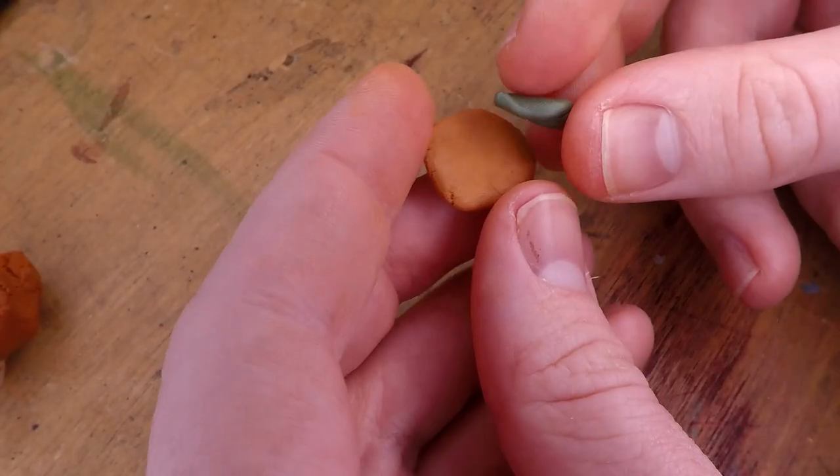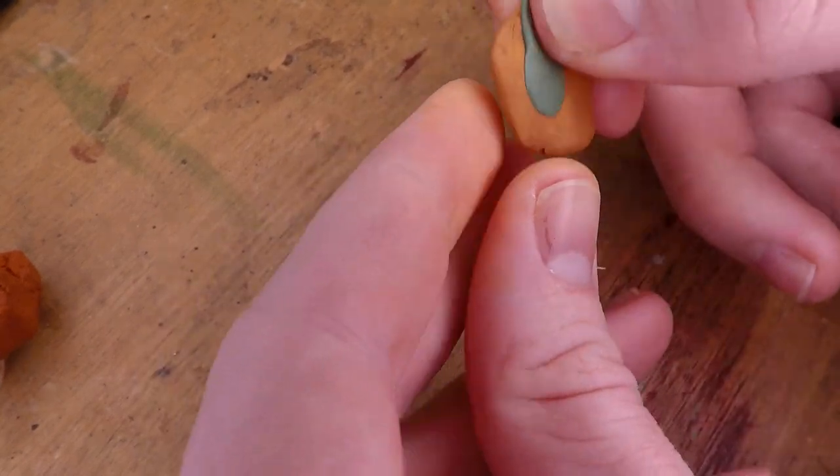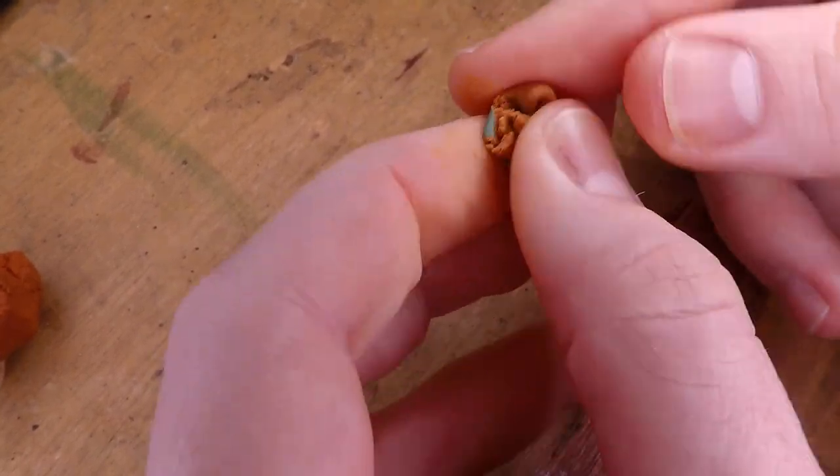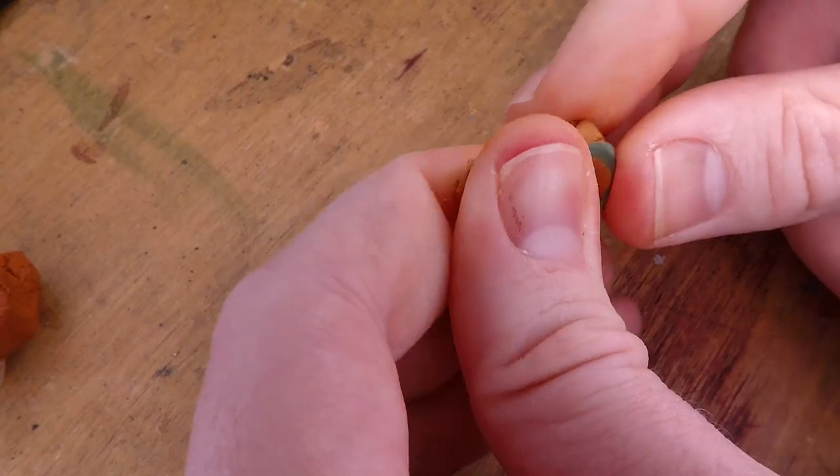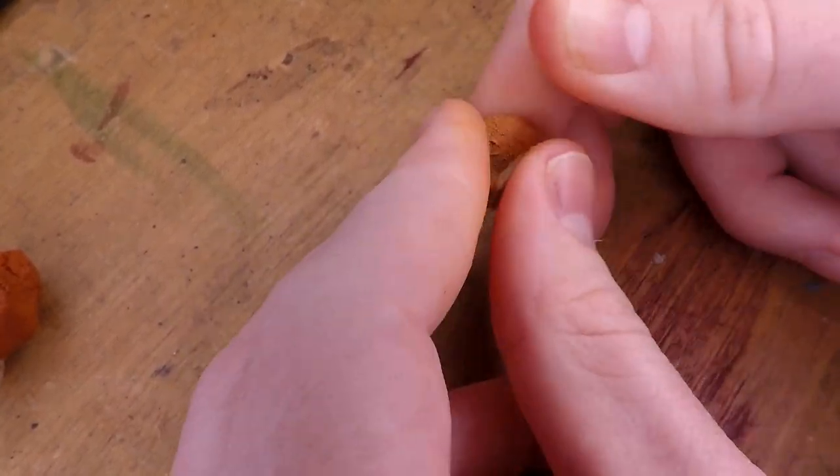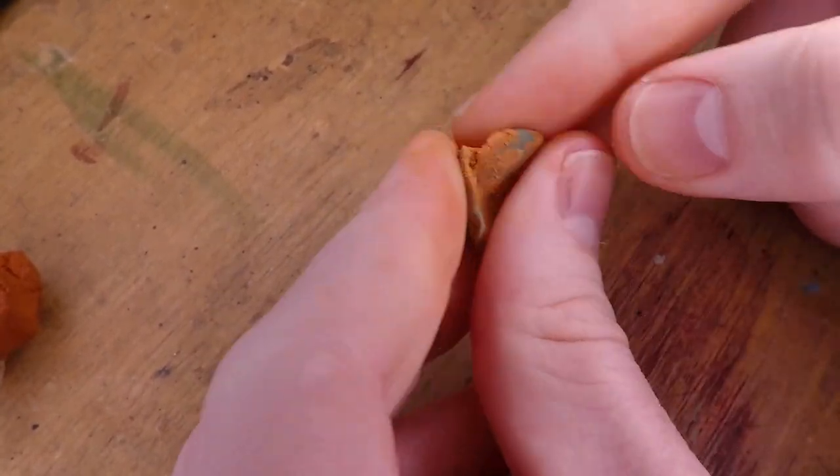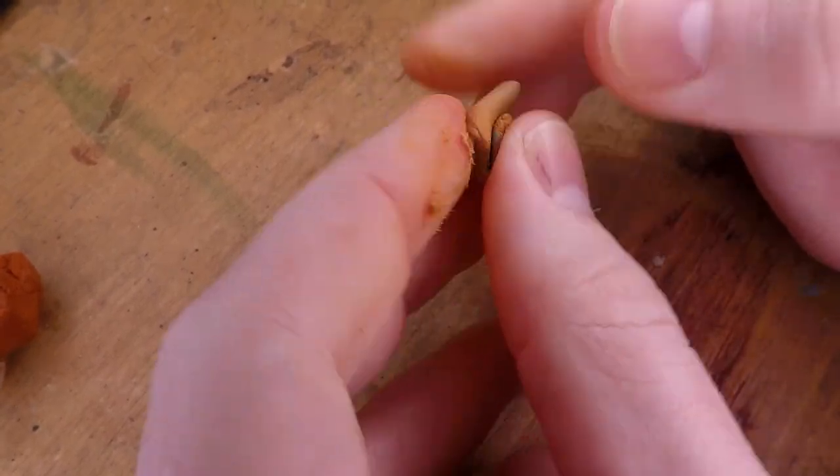What I've seen a lot of people do when working with Milliput or epoxy sculpt is actually mix it with some green stuff. So that's what I decided to do here, mixing some green stuff into the Milliput to make it a little bit easier to work with.